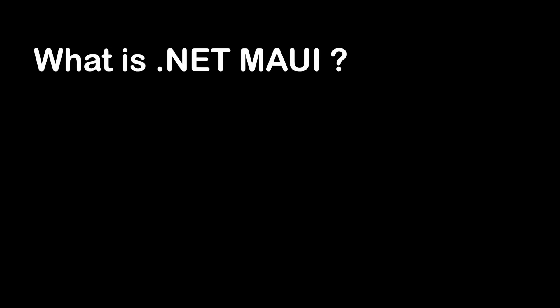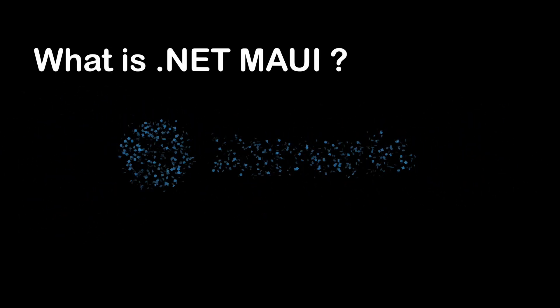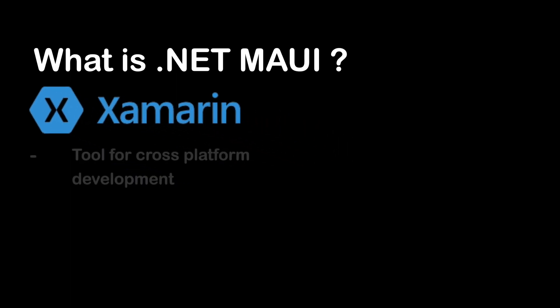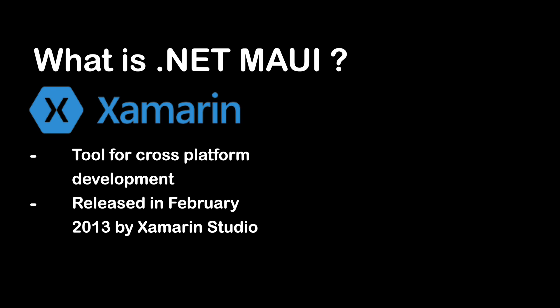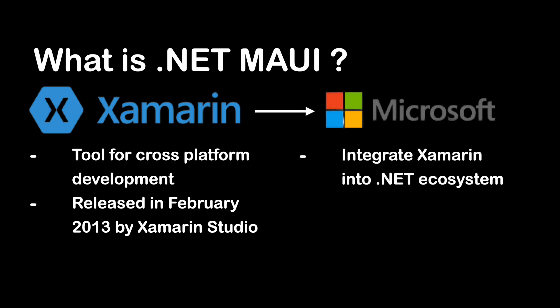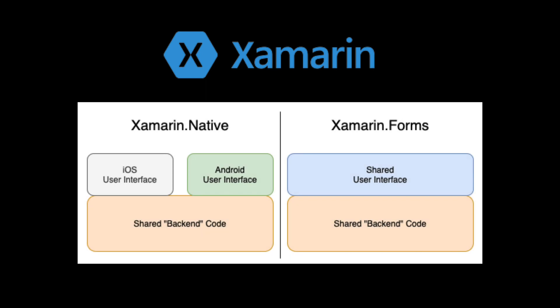What is .NET MAUI? To know .NET MAUI, we should first know Xamarin. Xamarin is a tool used for cross-platform development. It was released in February 2013 by Xamarin Studio, a Microsoft-owned, San Francisco-based software company founded in May 2011. In February 2016, Microsoft purchased Xamarin to integrate it into its .NET ecosystem and unified development processes, with the goal of making C# the language of choice for writing applications for any device.